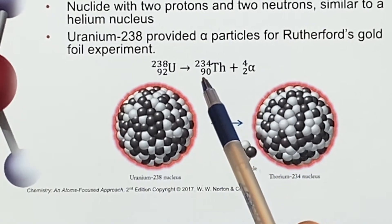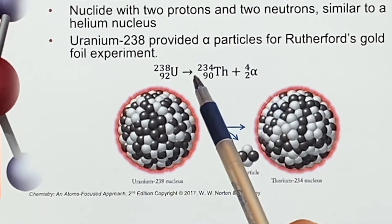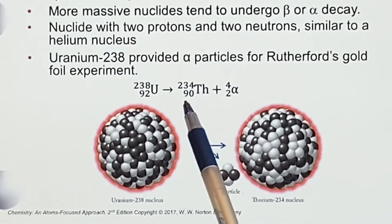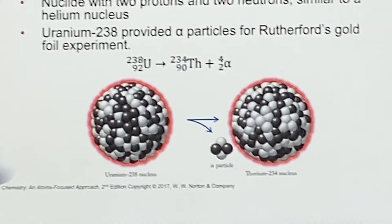And I have the same thing, I'm like well 92 equals 2 plus what? Well, 90. 238 equals 4 plus 234. Then I go and I look up element number 90 and I find out it's thorium and I fill it in.